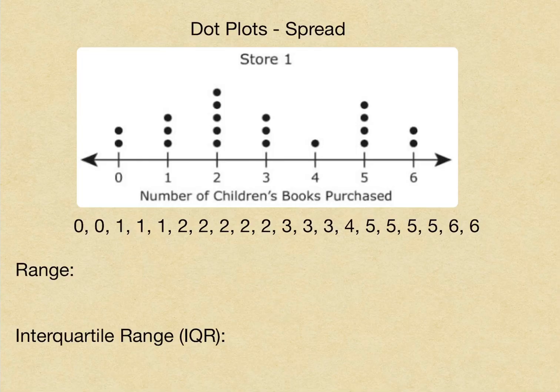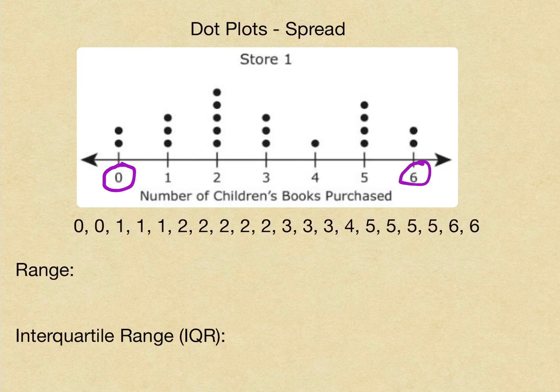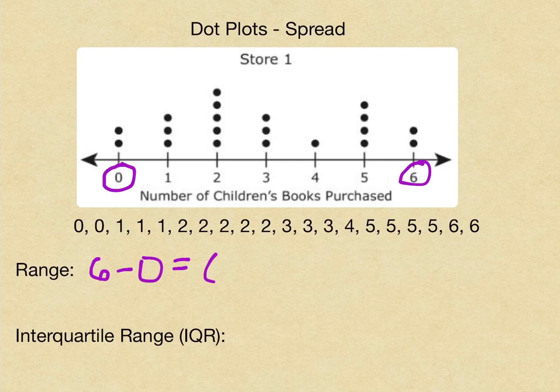Looking at these dot plots, we see that our minimum or our lowest number is zero, or our least, and our most or our highest number is six. That means we subtract 6 minus 0 to get a range of 6.